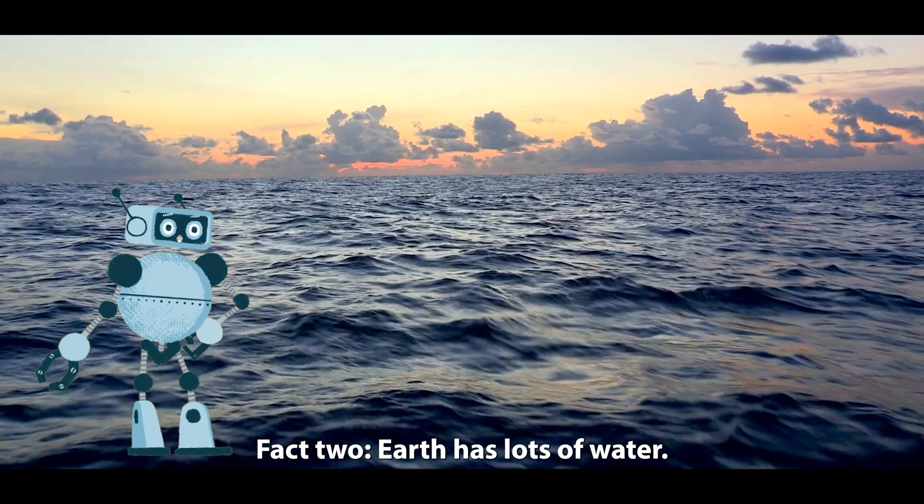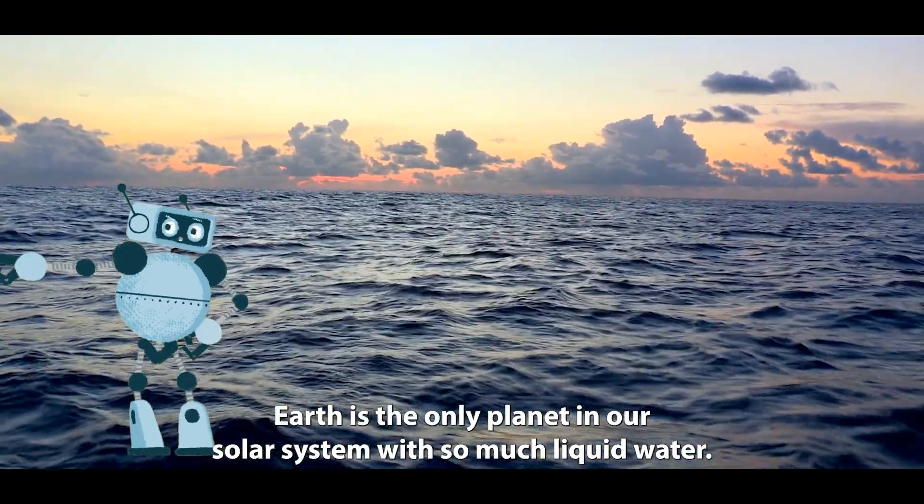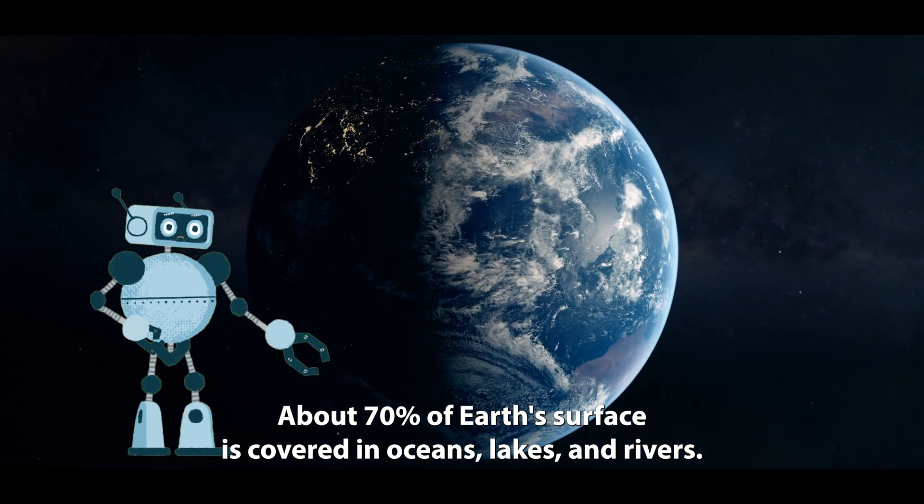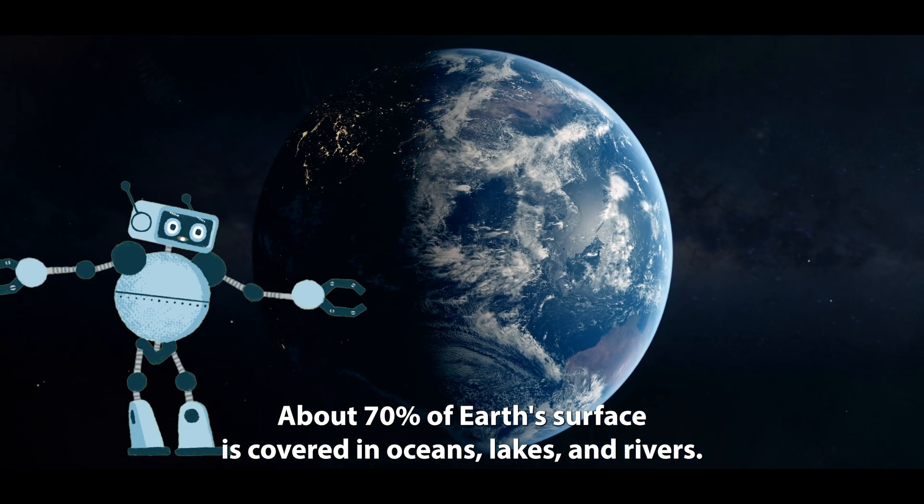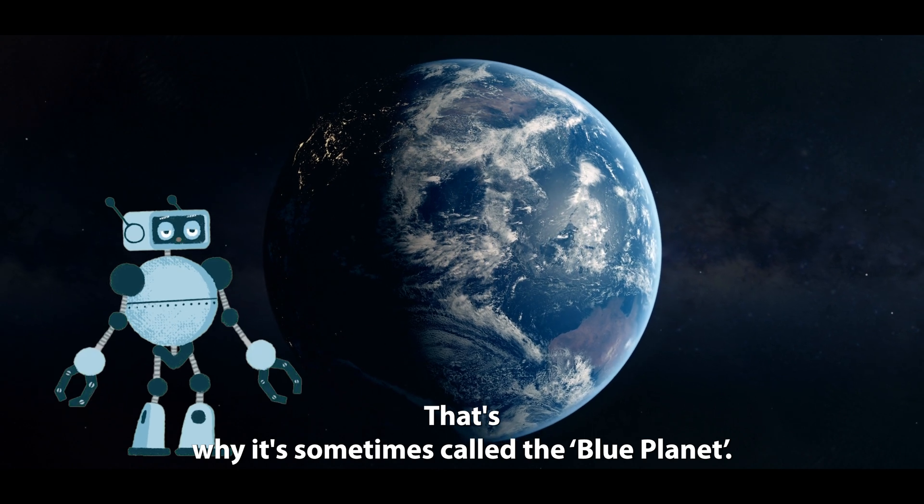Fact two: Earth has lots of water. Earth is the only planet in our solar system with so much liquid water. About 70% of Earth's surface is covered in oceans, lakes, and rivers. That's why it's sometimes called the blue planet.